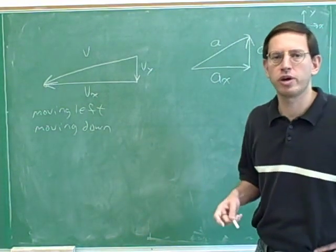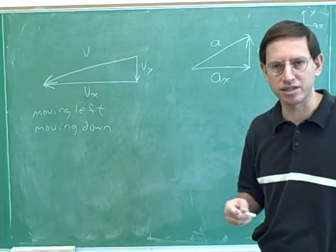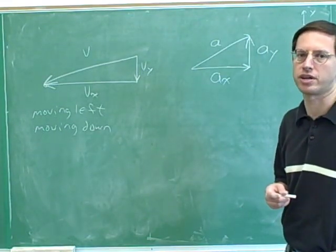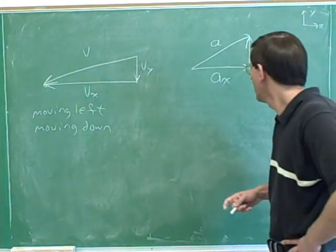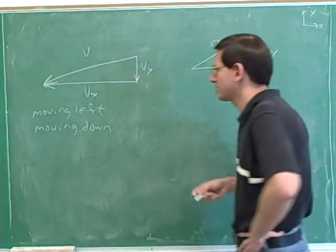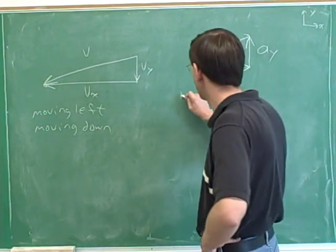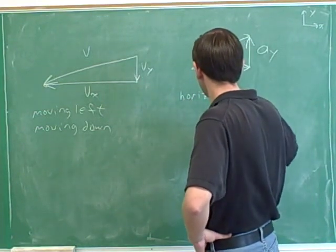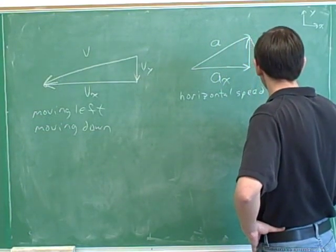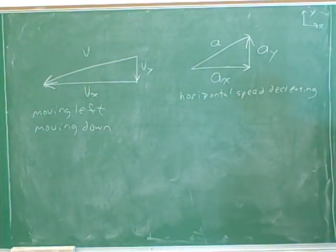Remember that the acceleration doesn't tell you which way you're moving. The acceleration tells you whether your speed is increasing, decreasing, or constant. Horizontally, our horizontal acceleration is right and our horizontal velocity is left. So horizontally, the two vectors are anti-parallel, which means that our horizontal speed is decreasing.